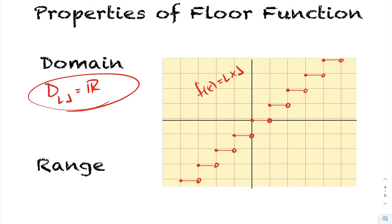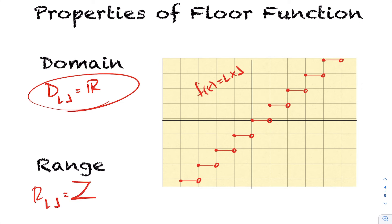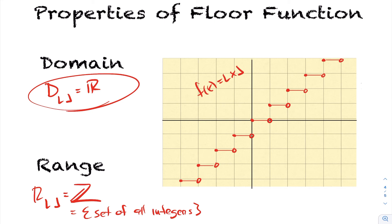The range is a little different. Looking at the graph, the output values are only integers: zero, one, two, three, negative one, negative two, and so on — nothing in between. So the range of the floor function is all integers, commonly denoted with the integers symbol, or simply stated as the set of all integers.